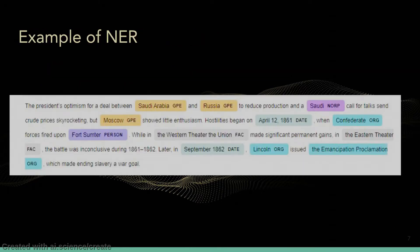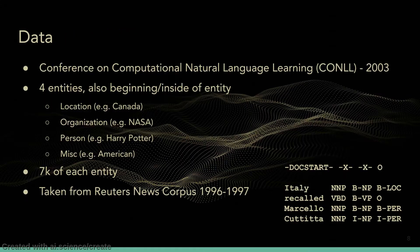Here is an example of named entity recognition in action, with locations, dates, names, and organizations being tagged. This dataset comes from the Conference on Computational Natural Language Learning in 2003. While there are only four different entities, there is the additional task of determining whether a token is at the beginning of an entity or somewhere inside. There are about 7,000 examples of each entity in the training set, and the text is taken from a news corpus, which works well with our goal of helping news organizations.